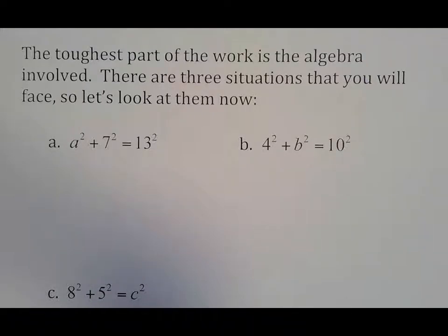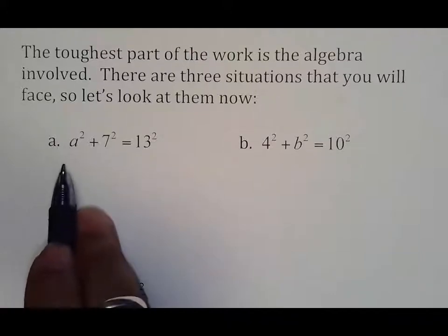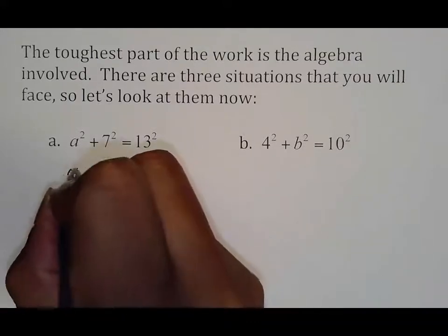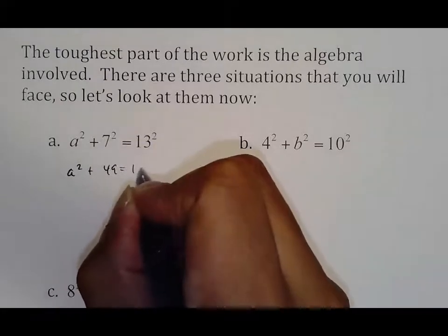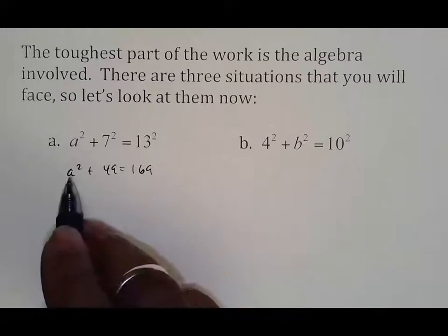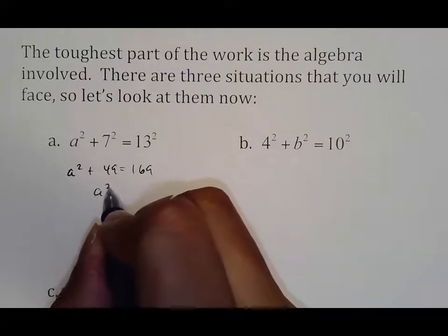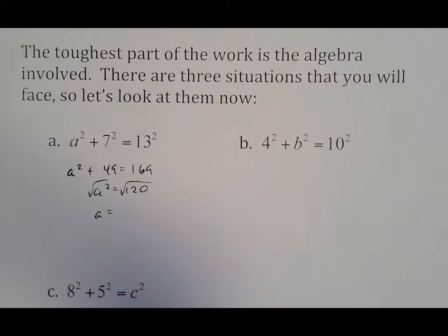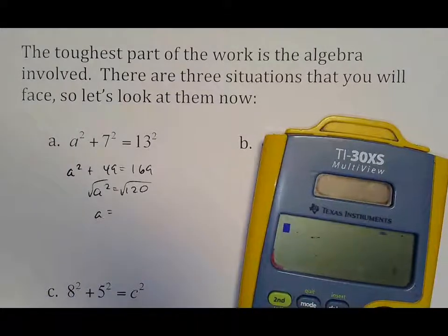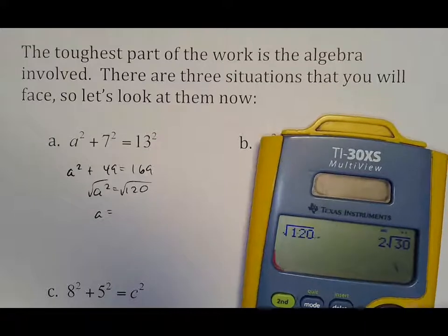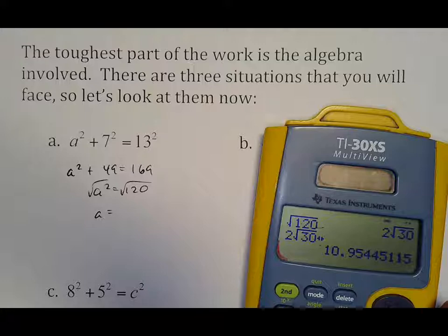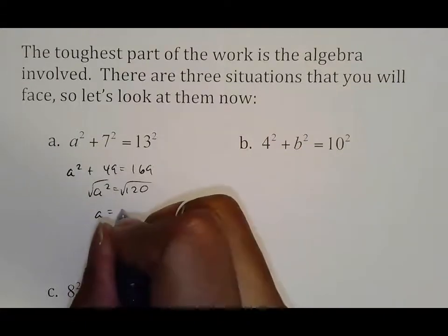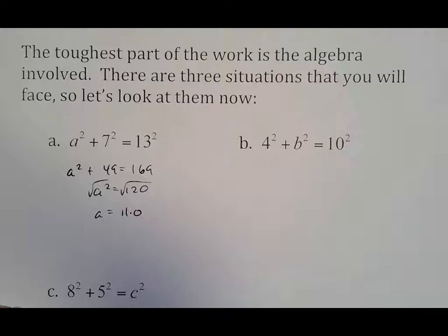Anyway, the toughest part is the algebra involved, which really isn't that tough. Let's just take a look at this real quick. So if you had A squared plus 7 squared equals 13 squared. The first thing you want to do is square everything that can be squared. So rewrite it as A squared plus 49 equals 169. From there, you want to get the A squared alone. So you subtract 49. So it would be A squared equals 120. And then you just make sure you square root both sides. So A would equal whatever square root of 120 is, which would be about 11.0. Because if you round this to the nearest tenth, that five is going to bump it up.